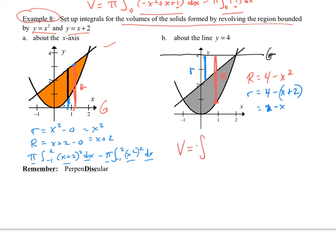So now I'm running for my volume. I'm running from negative one to two, pi r squared, big r. So I have the four minus x squared, quantity squared, dx.